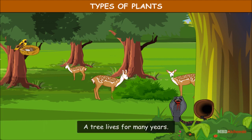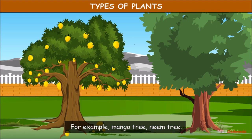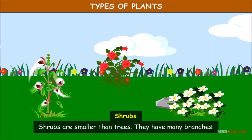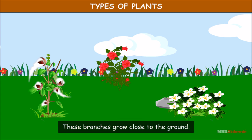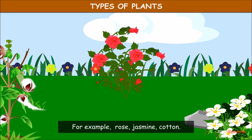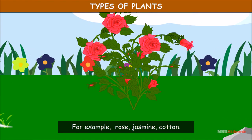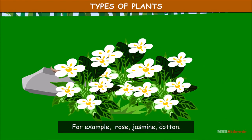A tree lives for many years. For example, mango tree and neem tree. Shrubs are smaller than trees. They have many branches, and these branches grow close to the ground. For example, rose and jasmine.